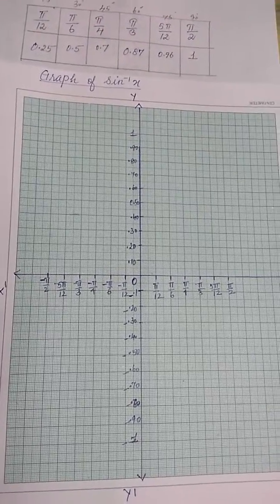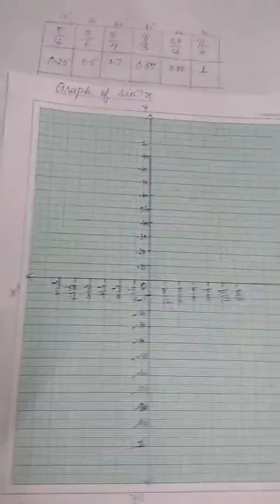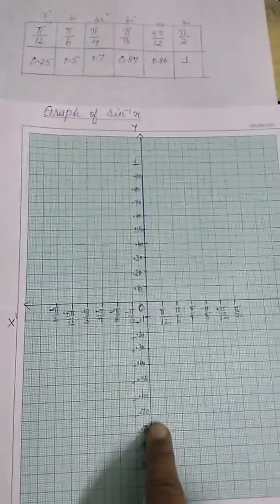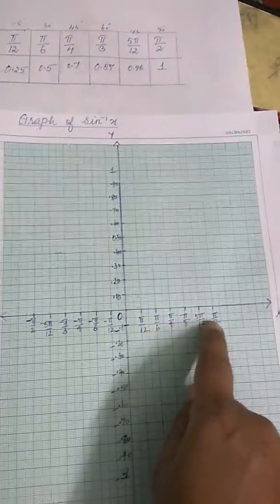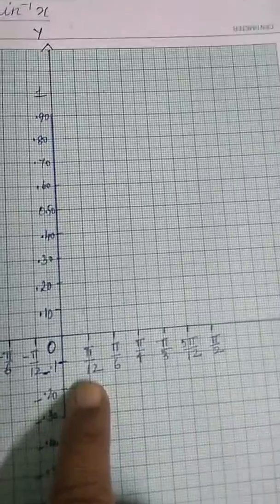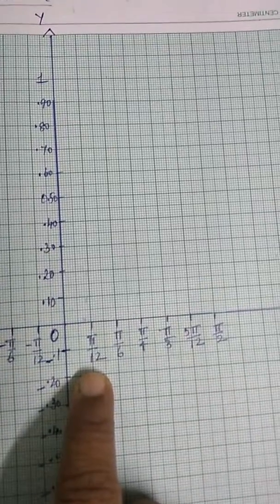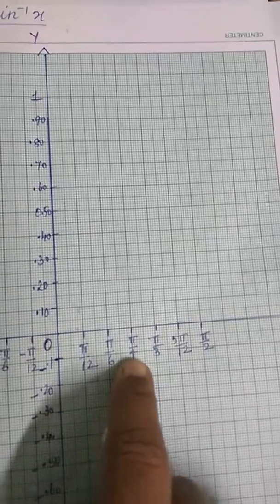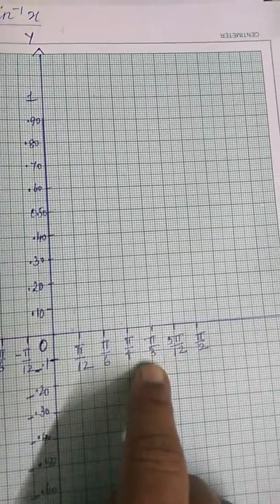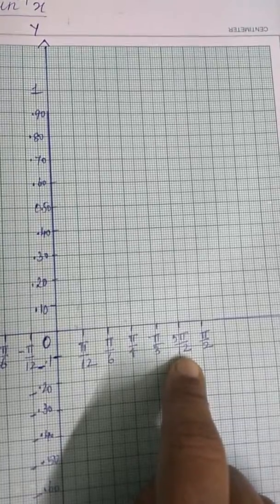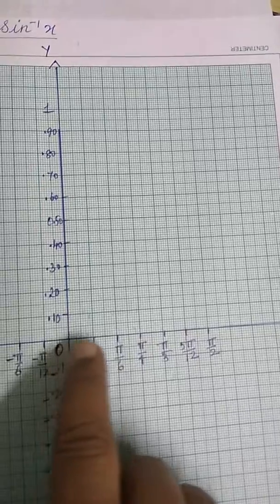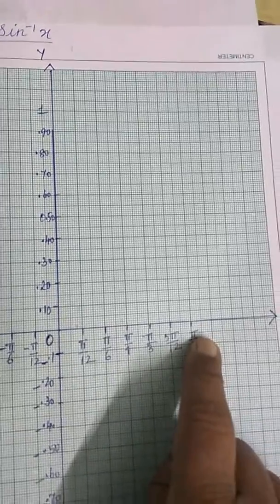For that, we need to draw the graph of sine x first. I have drawn the x-axis and y-axis. For the value of x, take pi by 12, that is 15 degrees, then increase by another 15 degrees each time: pi by 6 is 30 degrees, pi by 4 is 45 degrees, pi by 3 is 60 degrees, 5 pi by 12 is 75 degrees, pi by 2 is 90 degrees. I increase each 1 cm and take the scale as 15 degrees.